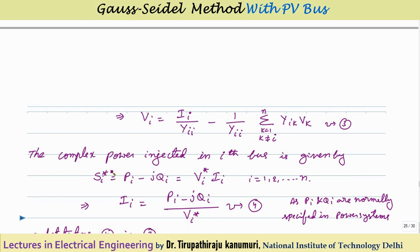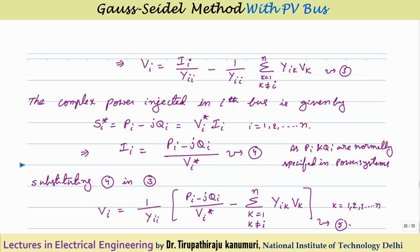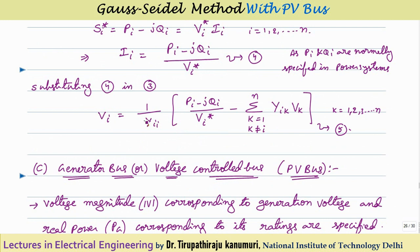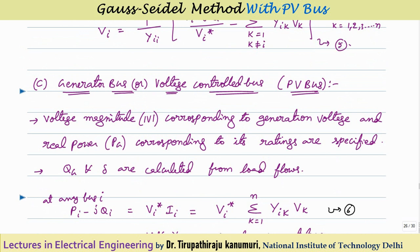Taking the conjugate, Si* = Pi − jQi = Vi*·Ii, so Ii = Si*/Vi* = (Pi − jQi)/Vi*. Since most buses are load buses where P and Q are known but I is unknown, we substitute this expression for Ii into the voltage equation. This gives Vi = (1/Yii)·[(Pi − jQi)/Vi* − Σ(k=1 to N, k≠i) Yik·Vk]. Notice that Vi appears on both sides, which is why iterative methods are needed.